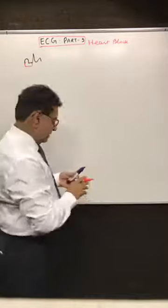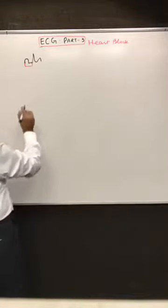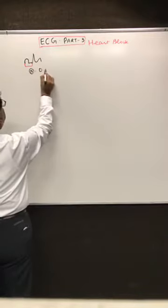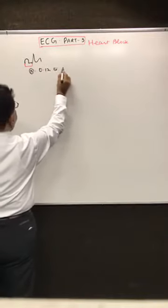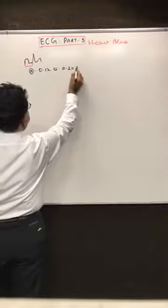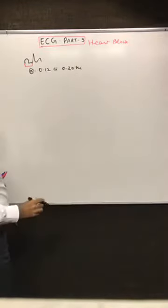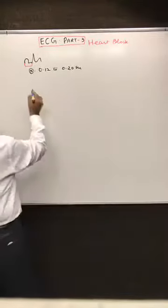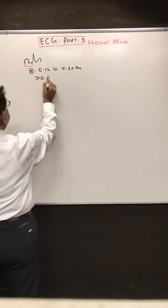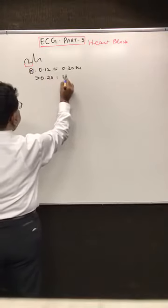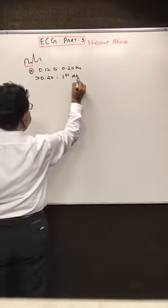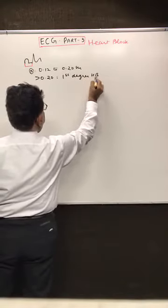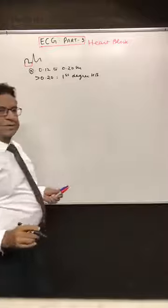Is the PR interval normal? The normal PR interval is 0.12 to 0.20 seconds. If the PR interval is more than 0.20 seconds, then we call it first-degree heart block.